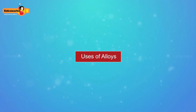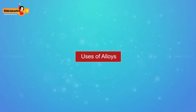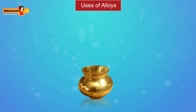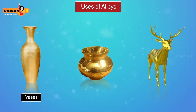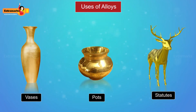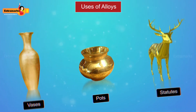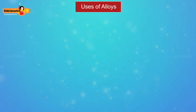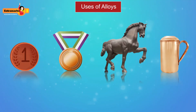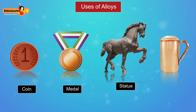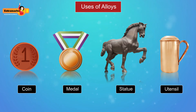Different alloys have different uses. Brass is used for making decorative articles like vases, pots, and statues. Bronze, an alloy of copper and tin, is used for making coins, medals, statues, and utensils.